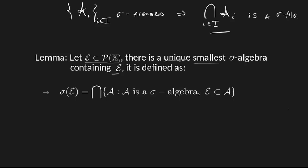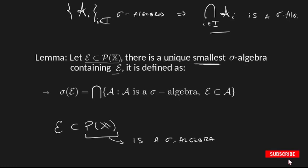Well that there exists a sigma algebras containing E is very easy because every time we grab E in parts of X, well parts of X is a sigma algebra. But what this theorem is telling us is that this sigma algebra is in particular the smallest one that contains E. And what does it mean for it to be the smallest one?